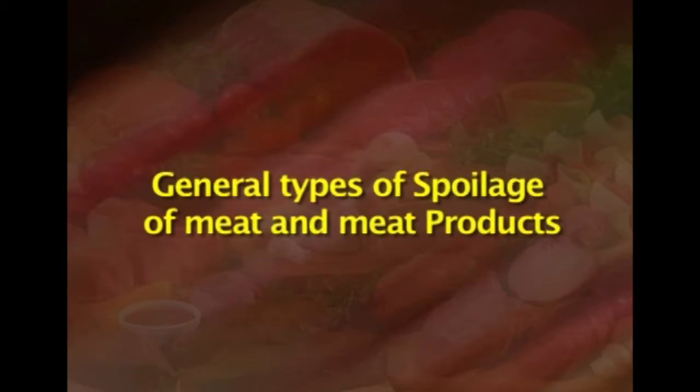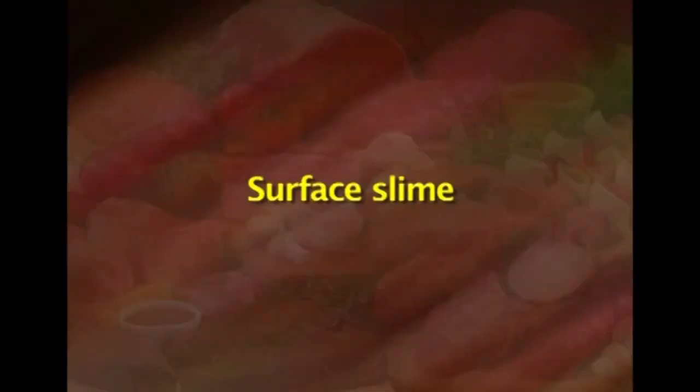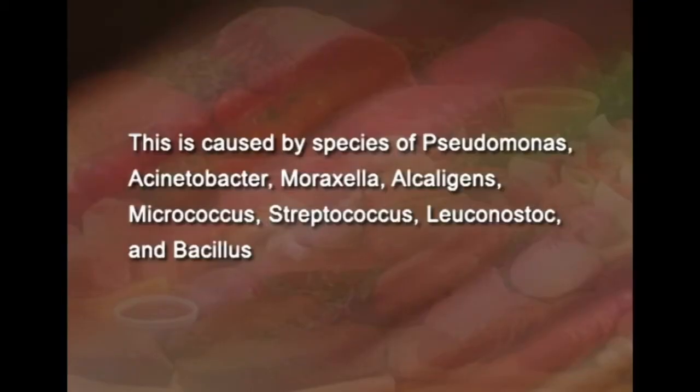Looking at general types of spoilage, the first is surface slime, caused by species of Pseudomonas, Acinetobacter, Moraxella, Alcaligenes, Micrococcus, Streptococcus, Leuconostoc and Bacillus. Some species of Lactobacillus can also produce slime. The spoilage microflora form a thin film on the meat enabling them to obtain nourishment from the substrate. Temperature and availability of moisture influence the kind of microorganisms that cause surface slime.